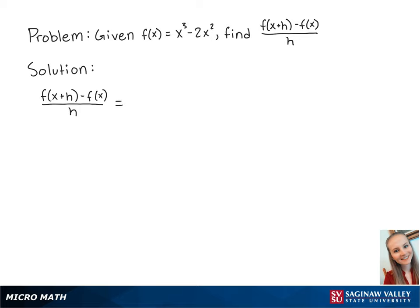First, we're going to plug in the function so that we have x plus h cubed minus 2 times x plus h squared minus x cubed minus 2x squared all over h.